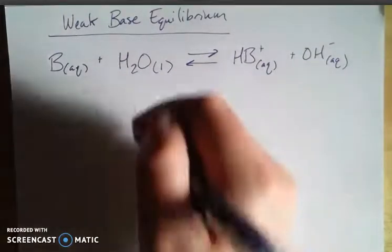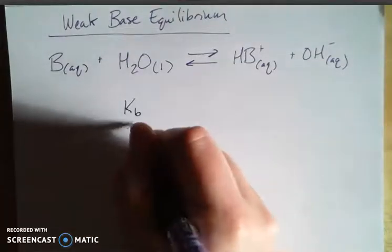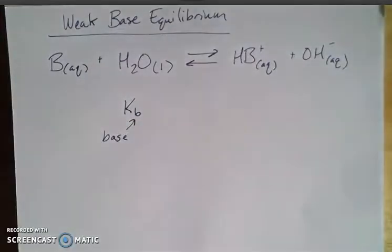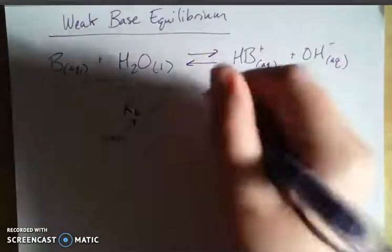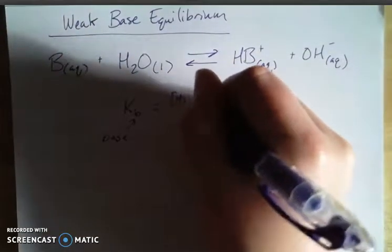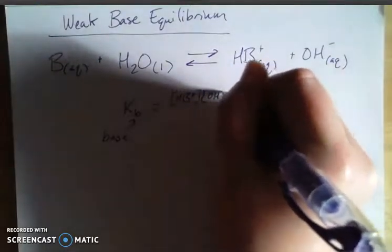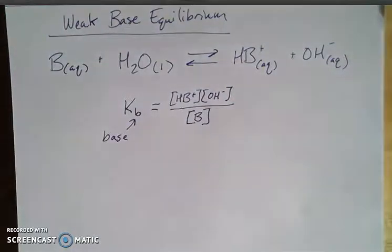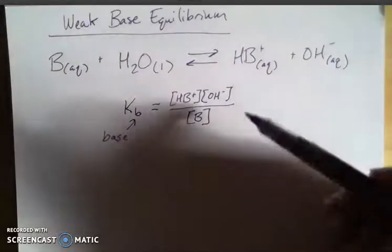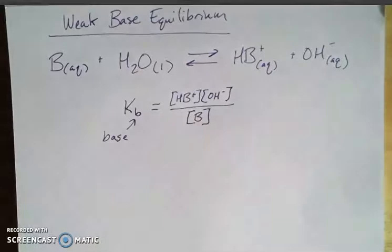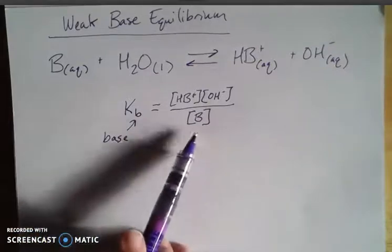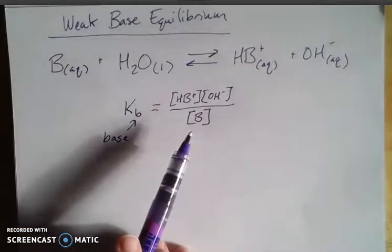So if we're thinking about a KB expression, remember K is our equilibrium constant. That subscript gives us information about the type of equilibrium we're looking at, so this would be a base. Then it's the same format, the concentration of our products over the concentration of our reactants. I'm omitting my water because it's a pure substance, so we can't talk about the concentration of a pure substance. The magnitude of my KB is going to give me information about how strong or weak this base is.